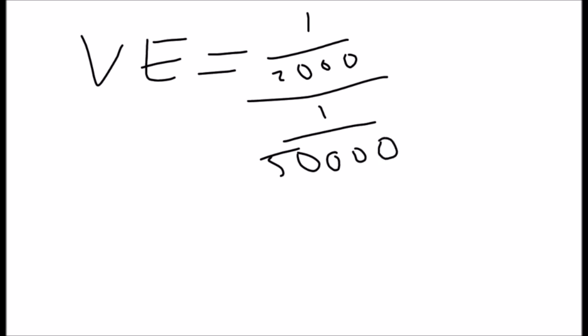Vertical exaggeration equals 1 over 2,000 over 1 over 50,000. Invert the fractions.